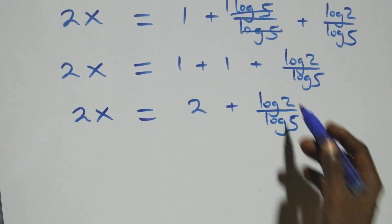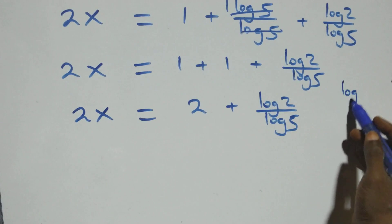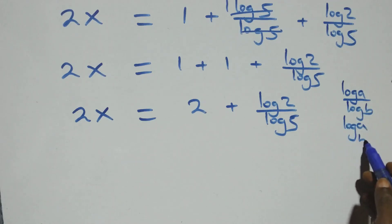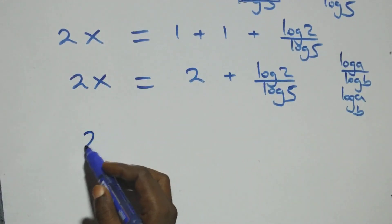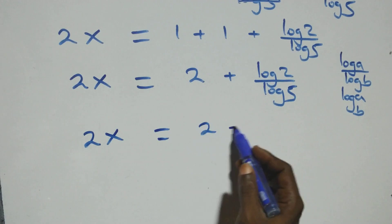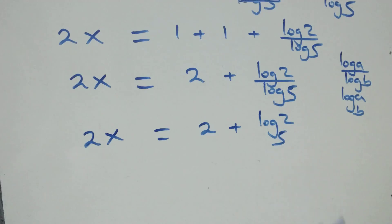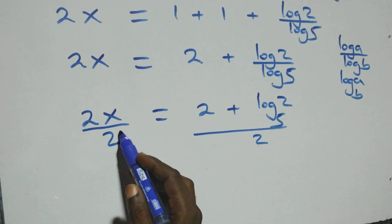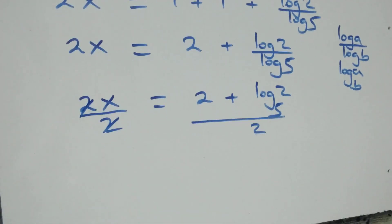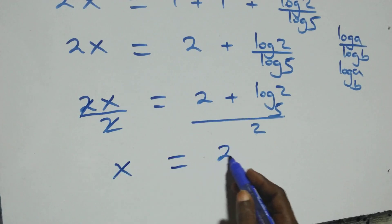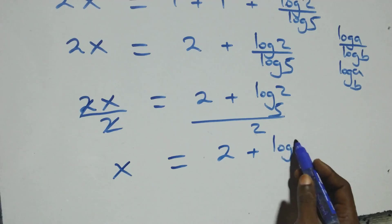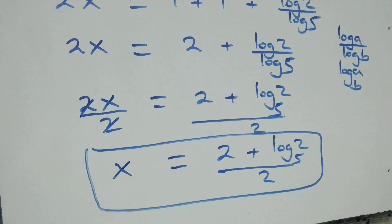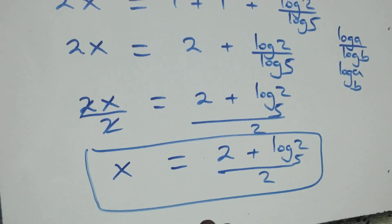We apply the change of base rule: log a over log b is the same as log a to base b. So this becomes 2x equals 2 plus log 2 to base 5. Dividing both sides by 2, the 2s cancel and we have x equals 2 plus log₅2, all over 2. That is the value of x.